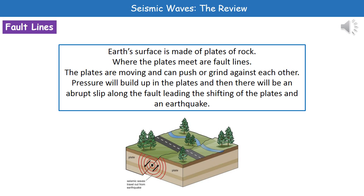Because these big plates that make up the surface of the Earth are always moving, they can push and grind up against each other. When our plates are pushing against each other, we can build up pressure in the plate, and when that pressure gets to a certain point it's going to cause those plates to slip past very quickly. That rapid shifting of the plates generates an earthquake.